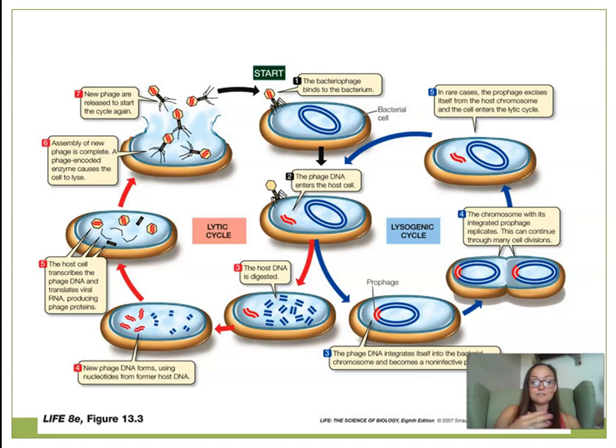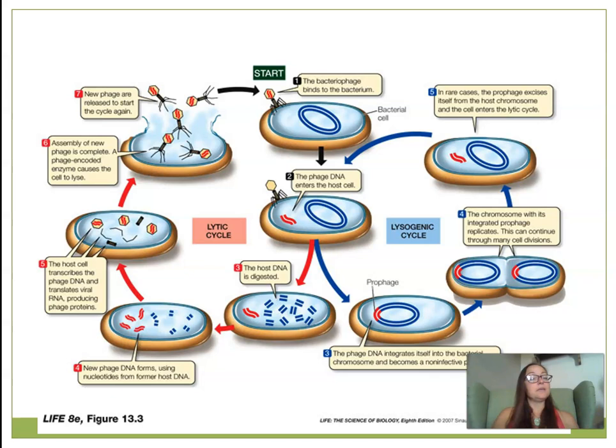When you look at the bacteriophage life, it has two cycles. The lysogenic cycle is a dormant cycle that increases the number of bacteria carrying the viral DNA. Then when triggered, it enters the lytic cycle, where those genes are actually expressed, the virus multiplies within the bacterium, and the cell ultimately dies as viruses burst out and go infect other nearby cells.